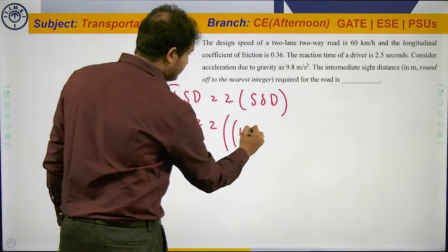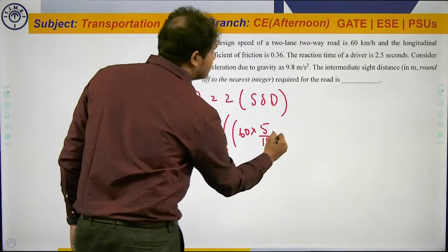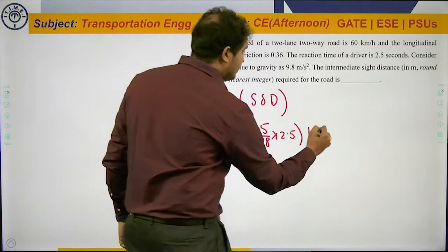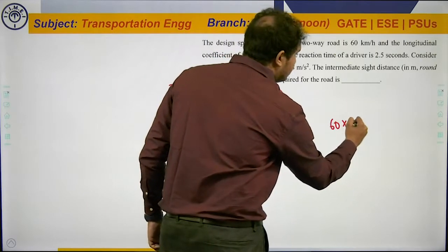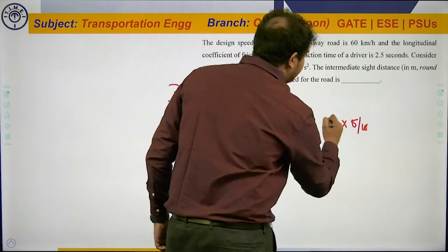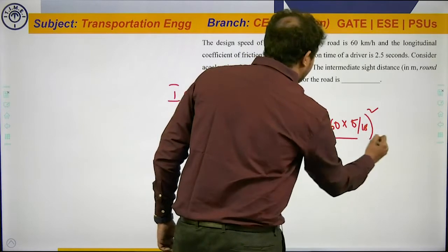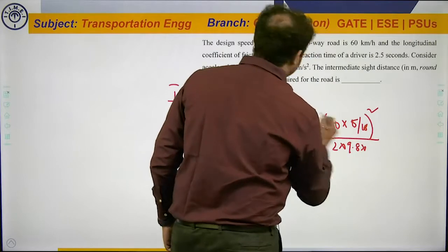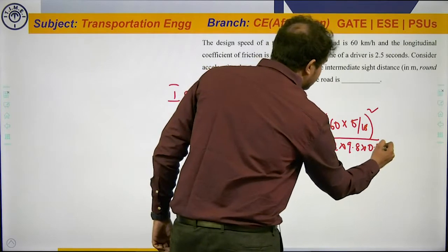VT is 60 times 5 by 18 (to convert to meters per second) times 2.5, plus 60 times 5 by 18 whole squared, divided by 2 times g (which is 9.8) times f (which is 0.36).